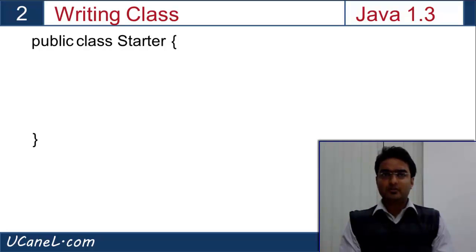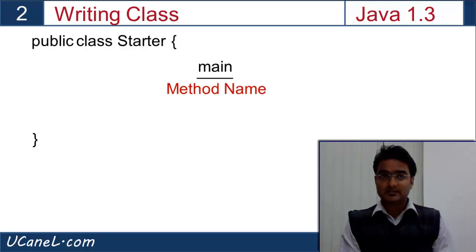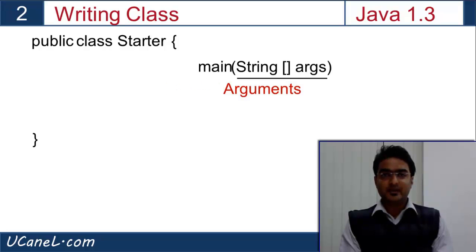To create a method, we don't need any keyword. We directly write the method name. In my case, it is main, followed by brackets where we specify arguments. Arguments are like input to a method. For example, if the method is addition which adds two numbers, then its arguments will be the numbers which you want to add.